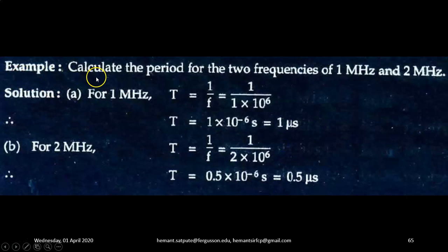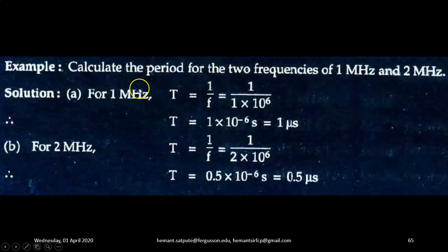Second example: calculate the period for two frequencies of 1 megahertz and 2 megahertz. Solution: Period is the reciprocal of frequency. For 1 MHz, T = 1/(1 × 10⁶) = 1 µs. For 2 MHz, T = 1/(2 × 10⁶) = 0.5 × 10⁻⁶ s = 0.5 µs.